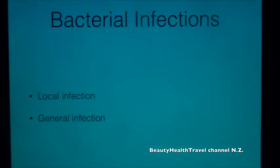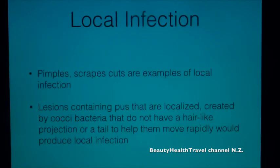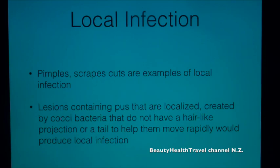Bacterial infections are classified as local infection or general infection. Pimples, scrapes, and cuts are examples of local infection. Lesions containing pus that are localized are created by cocci bacteria that do not have a hair-like projection or tail to help them move rapidly, and these produce local infections.